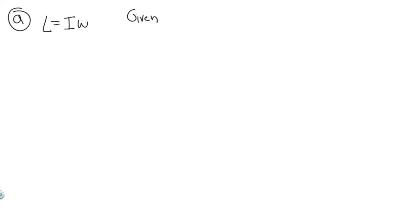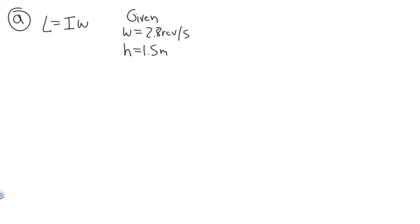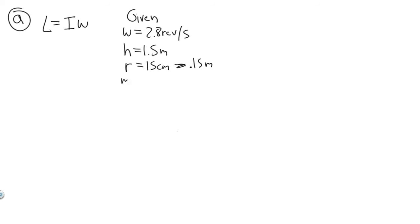The figure skater is spinning at 2.8 revolutions per second, which is the angular velocity. The height H is 1.5 meters. The radius is 15 centimeters, which I'll convert to 0.15 meters, since there are 100 centimeters per meter. And the mass is 48 kilograms.